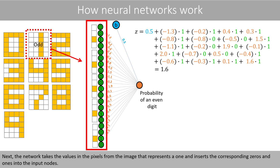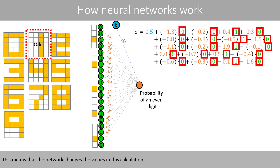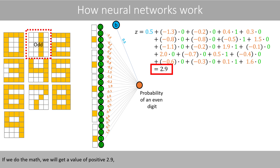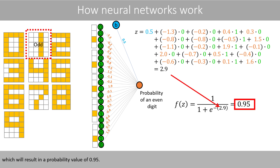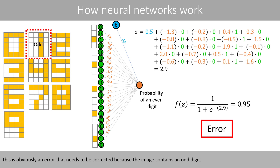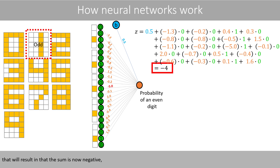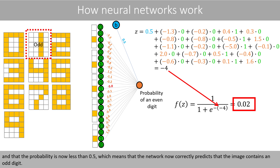Next, the network takes the pixel values from the image that represents a 1, and inserts the corresponding 0s and 1s into the input nodes. This means the values in the calculation change to correspond to those input nodes. If we do the math, we get a value of positive 2.9, which results in a probability value of 0.95. This is an error that needs to be corrected because the image contains an odd digit. Suppose that the network changes this weight from 1.9 to negative 5.0 — that results in a negative sum and a probability less than 0.5, so the network now correctly predicts an odd digit.